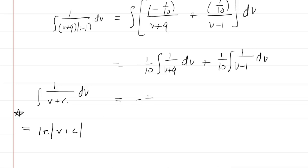So that's just a nice little shortcut that you might want to keep in mind. By applying that shortcut, we would get negative 1/10 ln absolute value of v plus 9 plus 1/10 ln absolute value of v minus 1. So we have finally computed the integral, but we're not done.